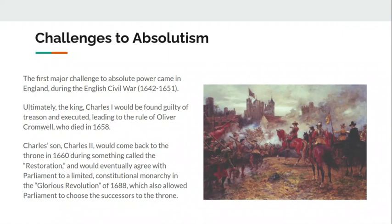That doesn't mean England immediately becomes the way Great Britain is today, where the king and queen's role is entirely ceremonial. The king is going to still have a lot of power really until we get to the World War I and World War II era. King George III has a lot of power when we get to the American Revolution, but not the same kind of power that Louis XIV, Louis XVI, or Peter the Great had. The English Civil War basically ends absolute monarchy in England and institutes a constitutional monarchy. I would remember the name Oliver Cromwell.